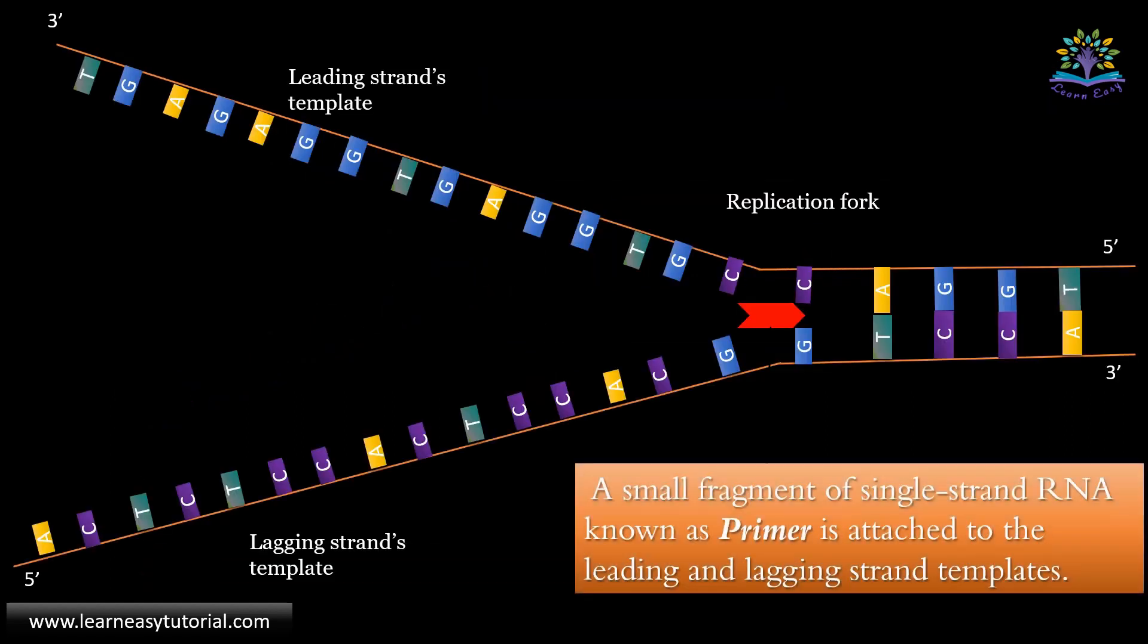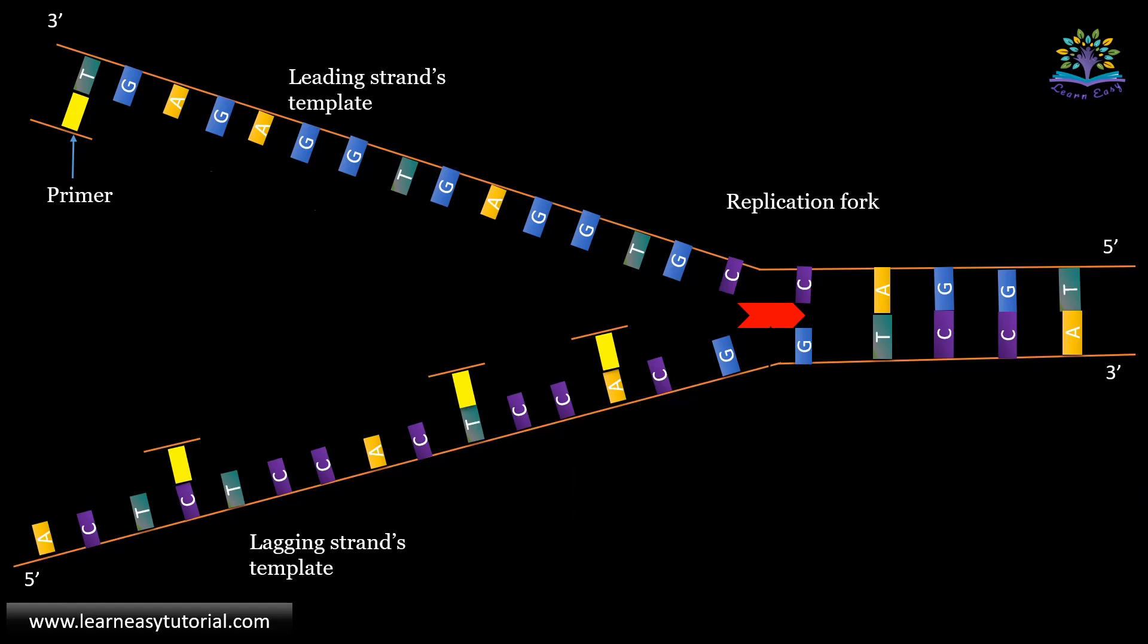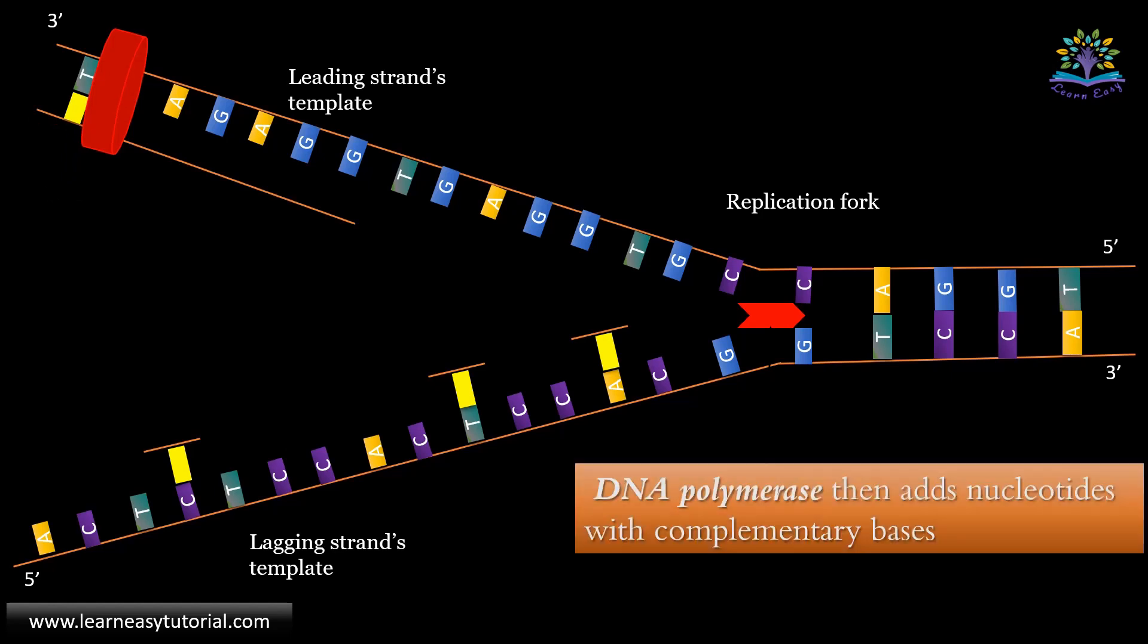Once the helicase starts to unwind the DNA, a small fragment of single strand RNA known as primer is attached to the leading and lagging strand templates. Primer initiates the replication process. Another enzyme DNA polymerase then adds nucleotides with complementary bases to the three prime end of the new strand.